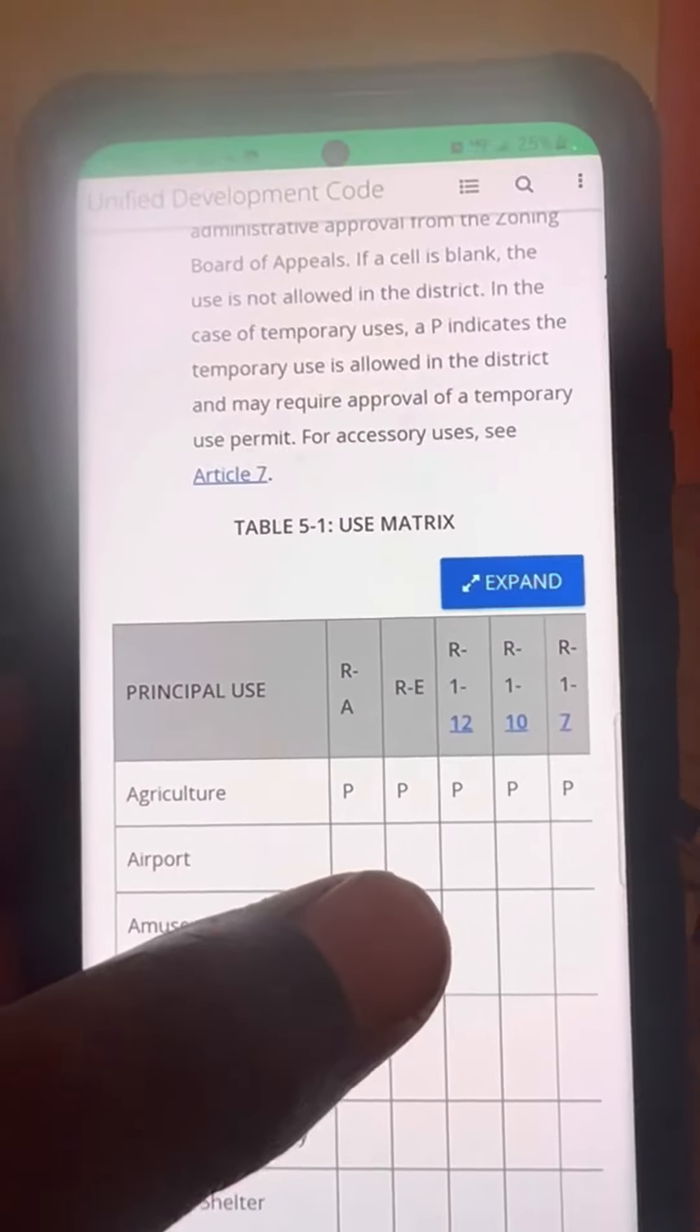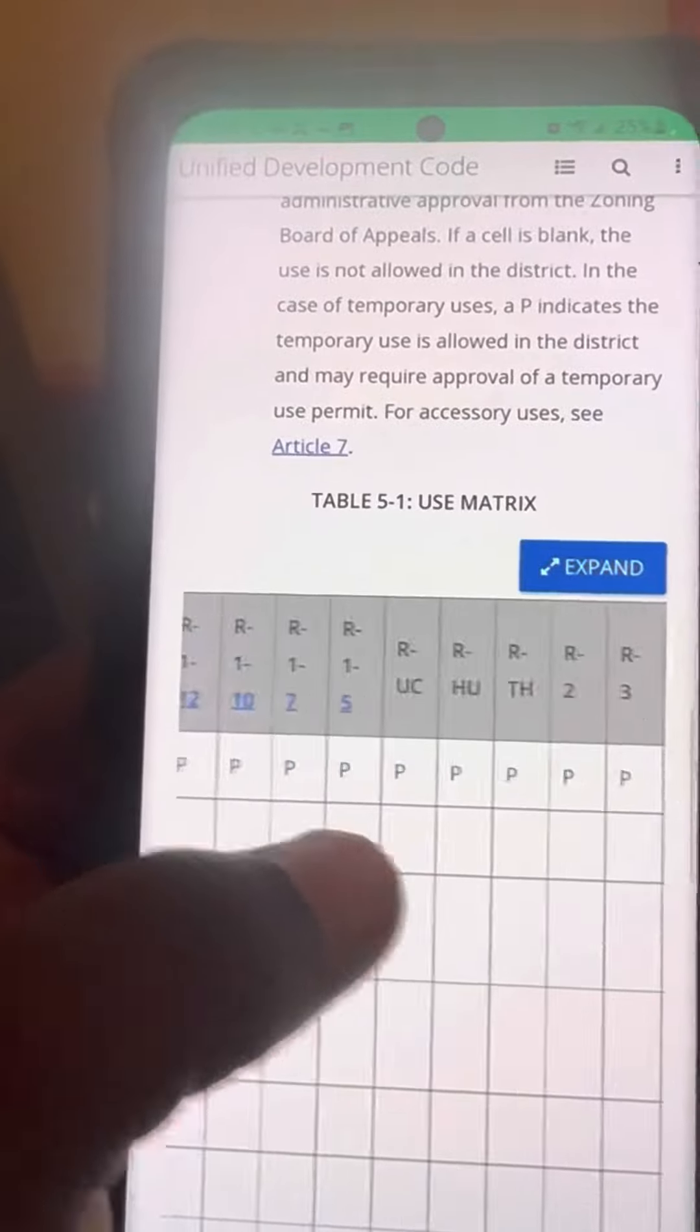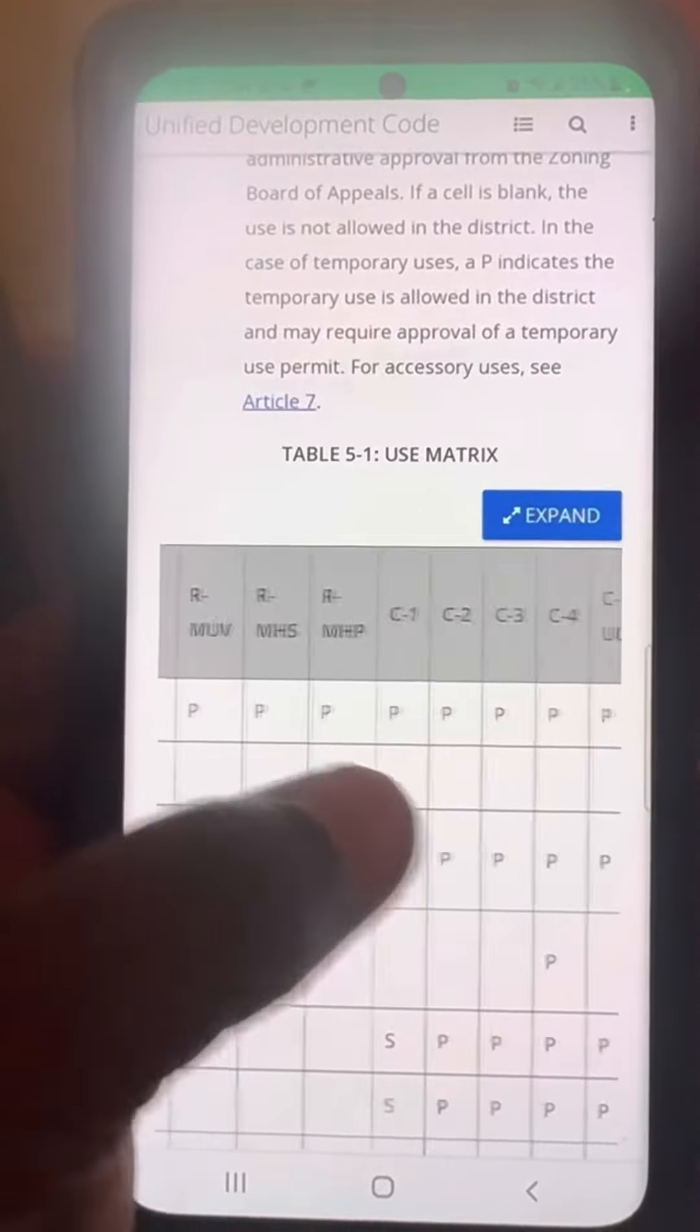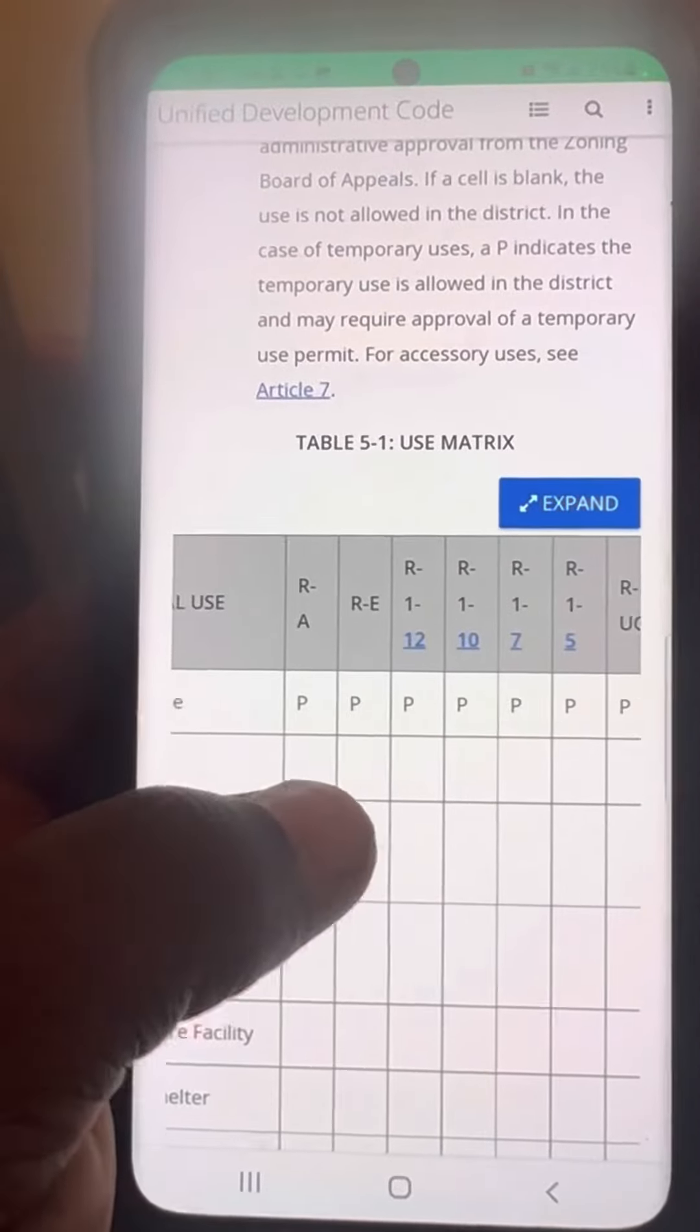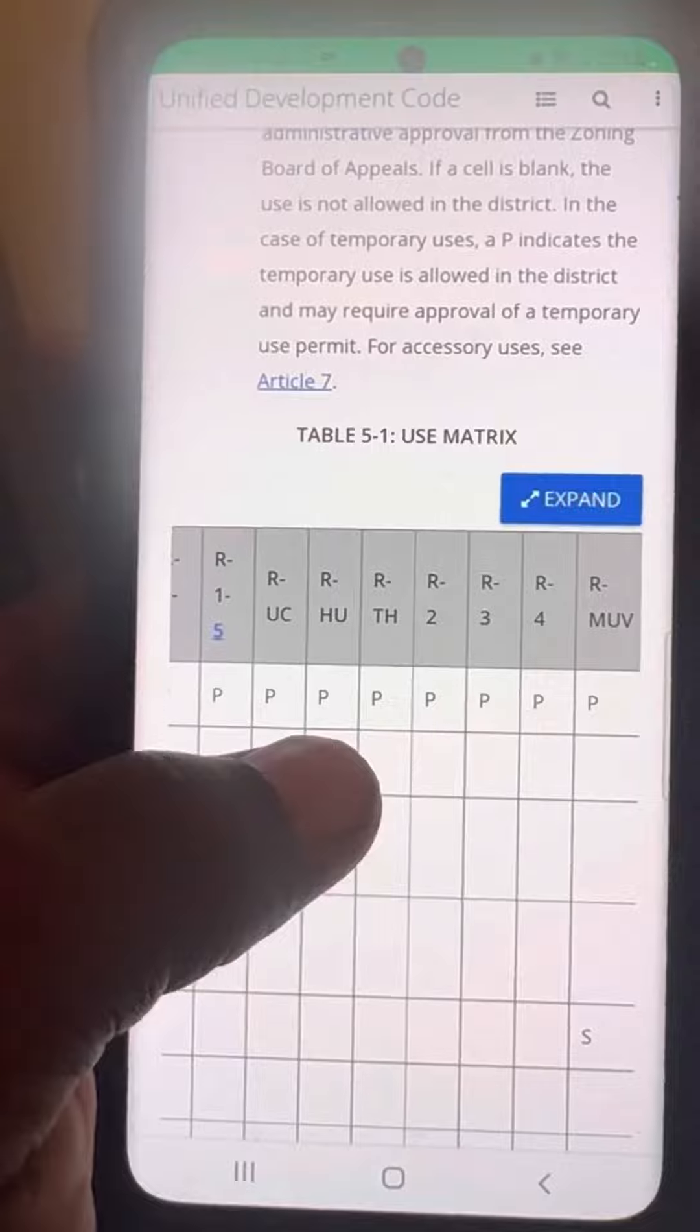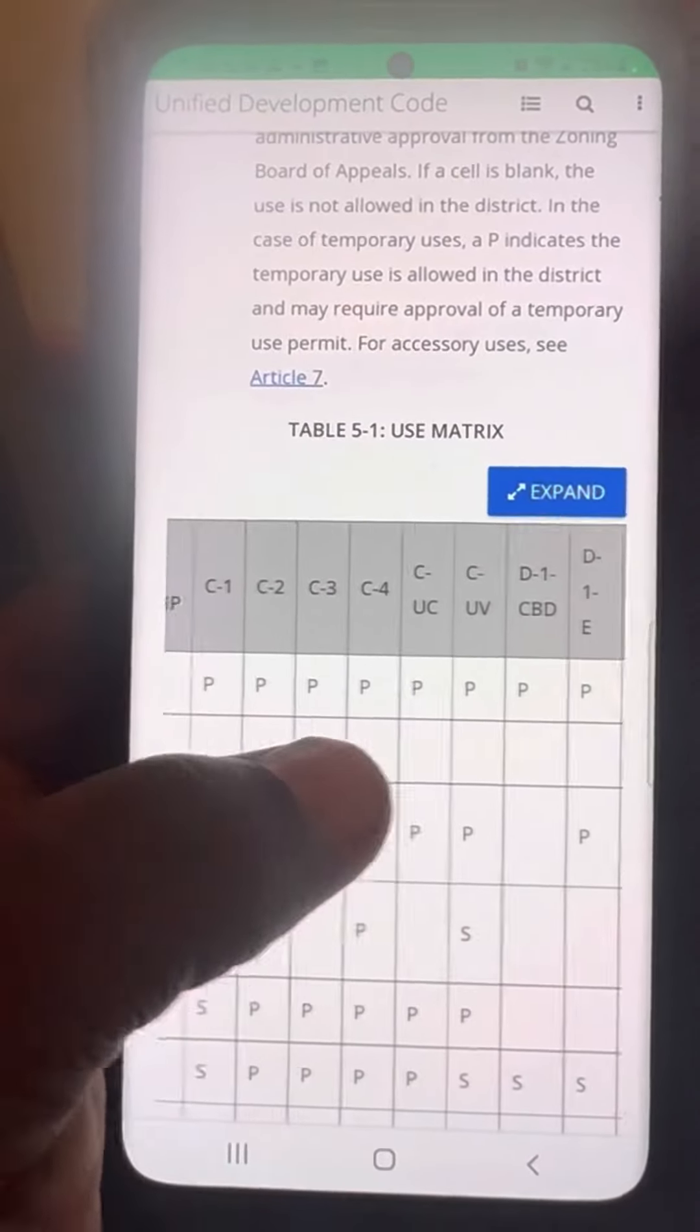Take your finger and press on that matrix and scroll it to your left. Keep going, you're gonna see R-1, R-UC, R-HU, C-1, and then you go down to C-UC.